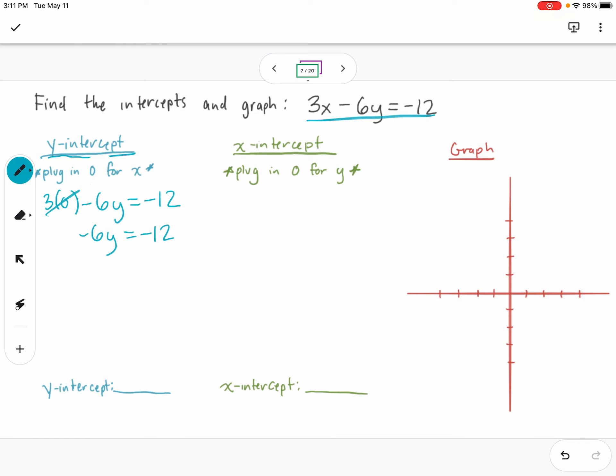Now I need y by itself. Y is being multiplied by negative 6, so I'll divide by negative 6. I get y equals 2, since negative divided by negative is positive and 12 divided by 6 is 2.